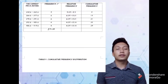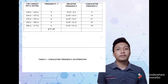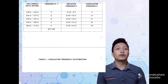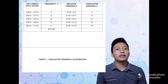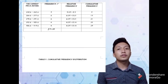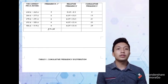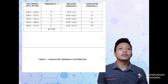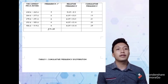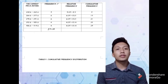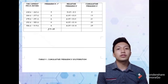Last but not least is cumulative frequency distribution. The cumulative frequency of a class is the sum of the frequency for that class and all previous classes. The cumulative frequency of the last class is equal to the sample size N. Table 3 shows the cumulative frequency distribution.